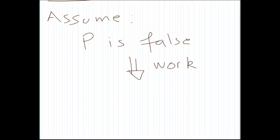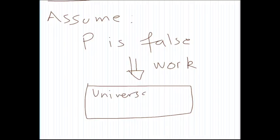and reach a conclusion that something which is universally true becomes false. So basically, you start with the opposite assumption of what you have to prove, work a little bit, and end up with some